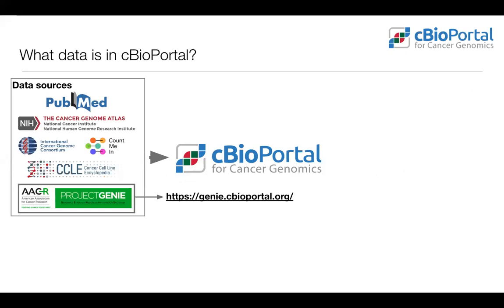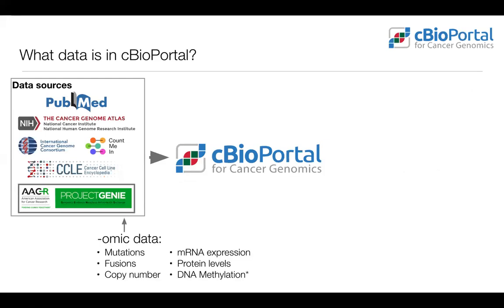GENIE data is publicly available but you do need to register for it at a slightly different URL. For all of these data sources, we support a range of omics data: DNA-based data, RNA levels, protein levels, and some limited support for DNA methylation. We also support a wide range of clinical data including cancer type, treatment, survival and other outcomes, and clinical biomarkers. Each study will have slightly different data based on what was available from each publication.